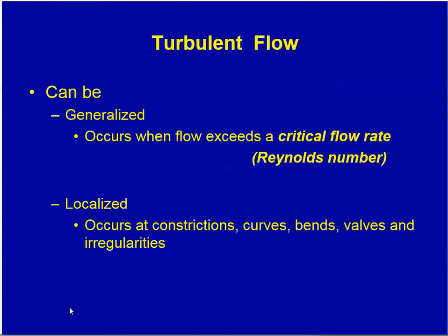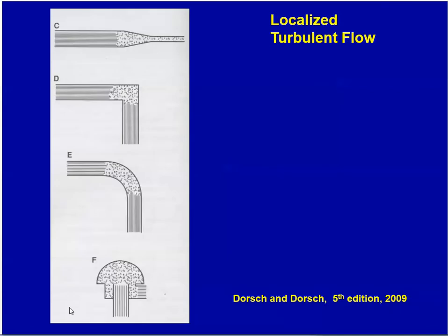Turbulent flow can be generalized, where it occurs throughout a tube, or localized, when it occurs in areas of restriction, curves, or bends. Generalized turbulent flow is detected by the Reynolds number, which we will discuss shortly. These are some of the localized areas where you generate turbulent flow.